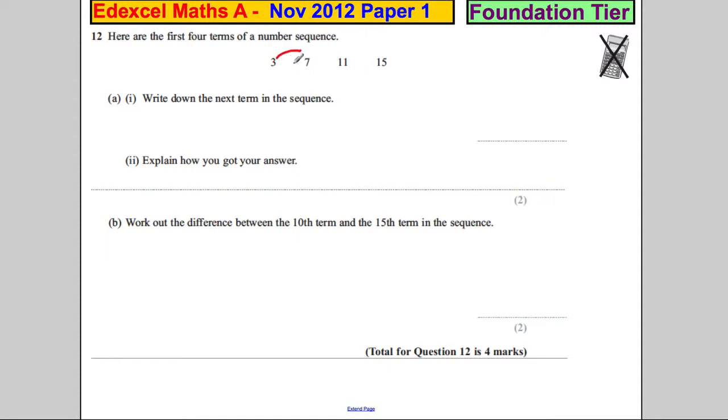Hopefully you can see that they're going up in fours. You're adding four each time. Add four and adding four. So clearly the next one's going to be four on, and that's going to be equal to 19.